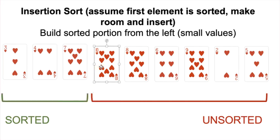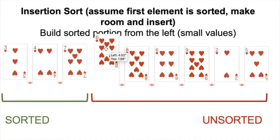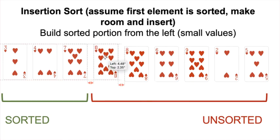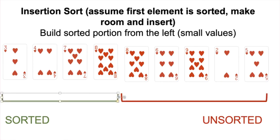The next iteration we start with the first element in our unsorted portion: ten. We ask is ten smaller than seven? It is not, so we don't need to move the seven over to make room for ten, and we insert ten in its sorted position, which shrinks the unsorted portion by one and grows the sorted portion by one.